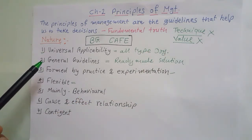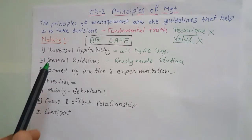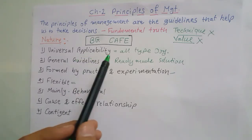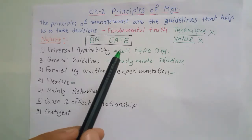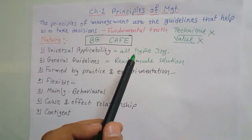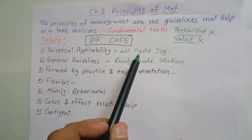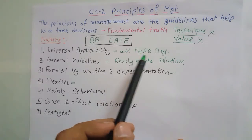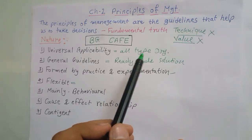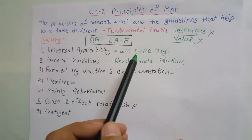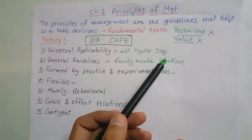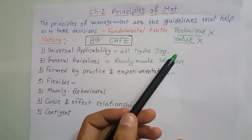Let's understand the nature one by one. The first is universal applicability. Universal applicability means these principles of management are applied to all types of organizations — whether small, big, or medium-sized; government, non-government, private, or public; profit-making or not-for-profit — everywhere they are applicable. It is applicable in the USA, Japan, India, or any country in the world. For example, division of work is applicable everywhere, and every kind of organization can apply it to get the specialization of workers.